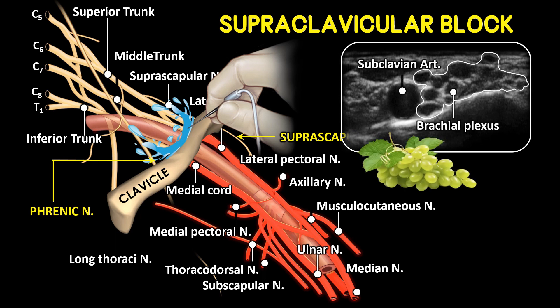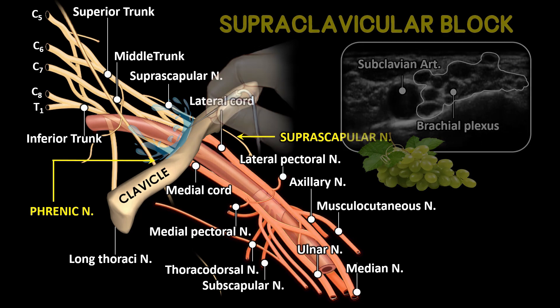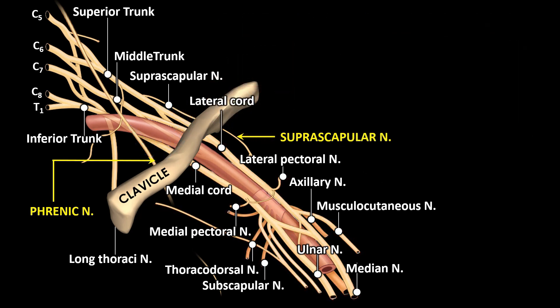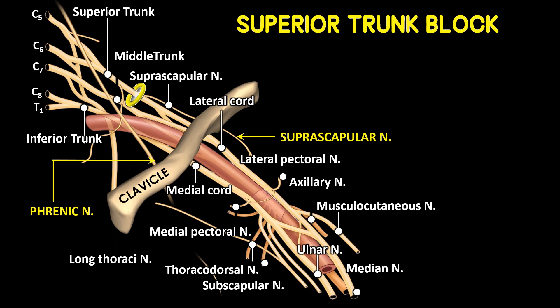The ability to image the plexus, rib, pleura, and subclavian artery with ultrasound has increased safety due to improved monitoring of anatomy and needle placement. Because the trunks and divisions of the brachial plexus are relatively close as they pass over the first rib, the extension and quality of anesthesia are favorable.